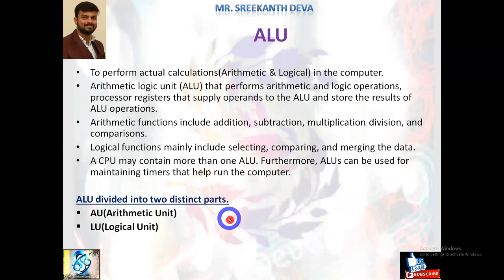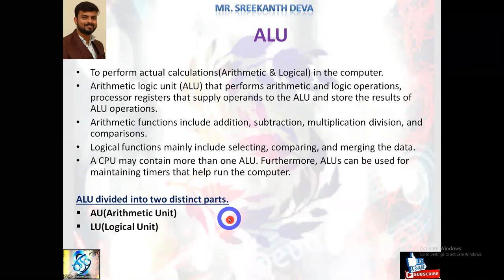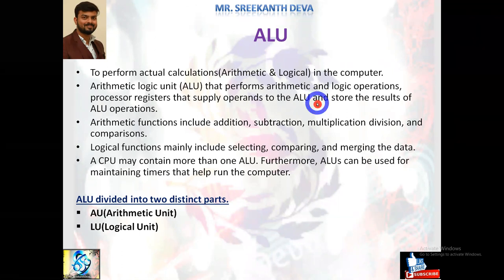The ALU has two internal temporary registers into which incoming data from memory is loaded for processing. Processor speed is defined as the number of computer instructions executed per second. A CPU executes instructions within a grouping called a cycle. The measuring unit for processor speed is megahertz (MHz) — one million cycles per second — or gigahertz (GHz) — one billion cycles per second.